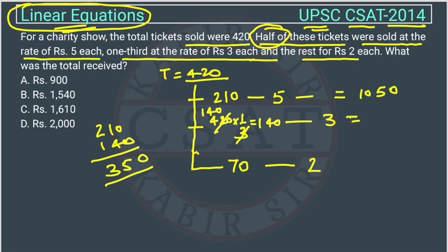Similarly from here, this will be 0 and this will be 140. So the total amount of money will be how much? 1610.